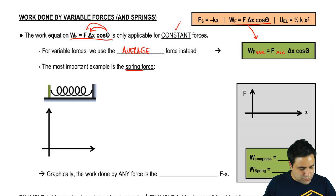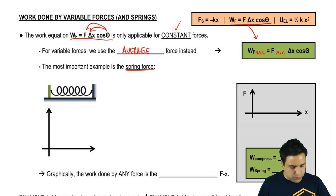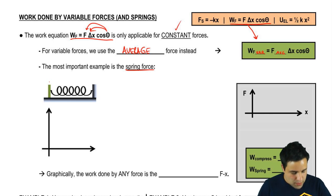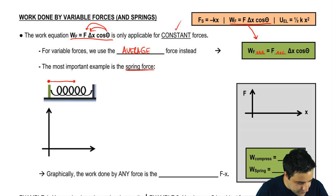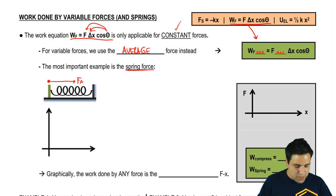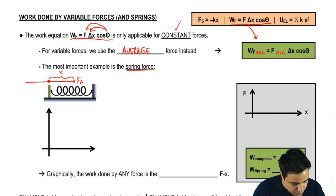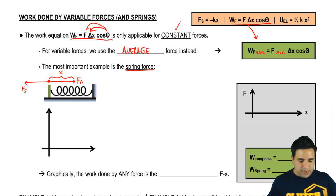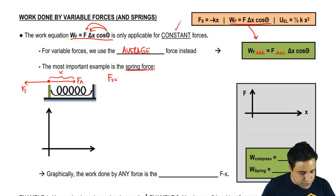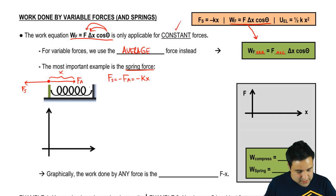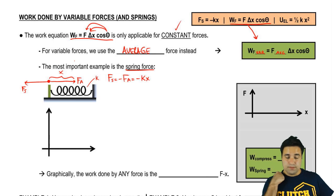The most important example is the spring force. If the spring is at a relaxed position, the compression is zero. As I push with an applied force F_a, causing a compression or deformation of x, the spring pushes back with the same magnitude. The force of the spring is the negative of my applied force, and it equals negative kx, where k is the spring coefficient and x is the deformation.